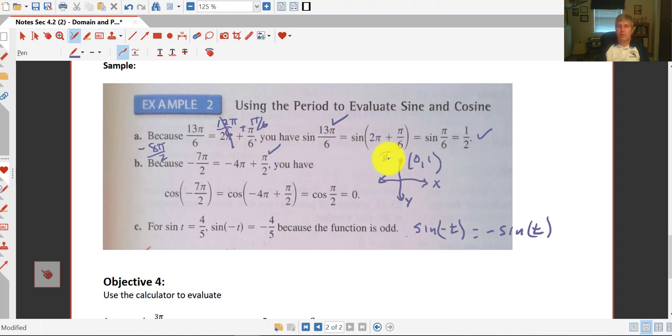Positive pi over 2 is up here on the y-axis at 0, 1. So the cosine of negative 7 pi over 2 equals the cosine of negative 4 pi plus pi over 2. So we really only have to evaluate at pi over 2. So the cosine of pi over 2 is our x coordinate, which is 0.